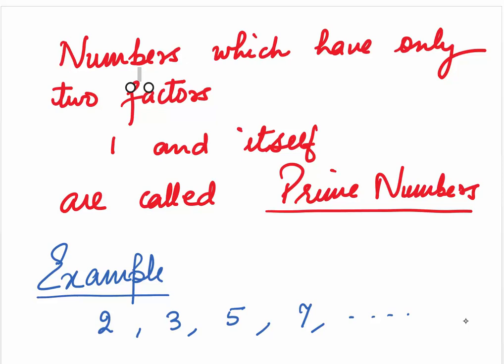For example, 2, 3, 5, 7, they are all prime numbers. If you factorize them, the only factors which they have is 1 and itself.